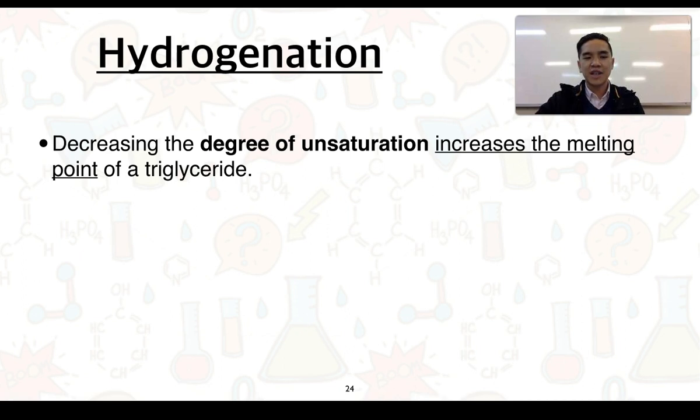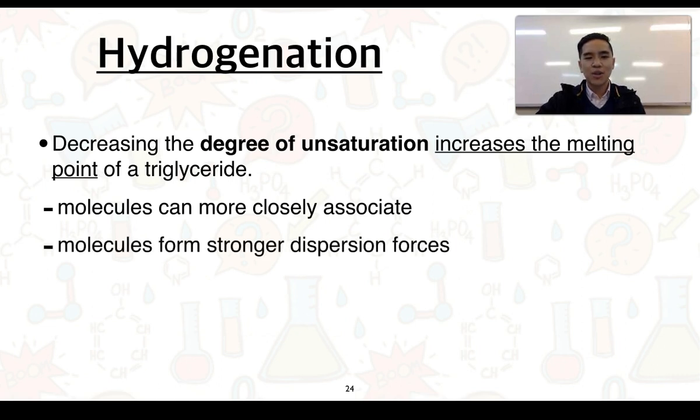In terms of what hydrogenation does, it decreases the degree of unsaturation within a triglyceride. If we decrease the degree of unsaturation, this in turn increases the melting point of our triglyceride. This is because the molecules themselves can more closely associate, as those kinks that are produced by the double bond are actually removed. And in doing so, the molecules are going to form stronger dispersion forces.